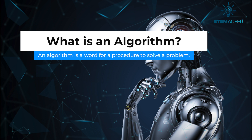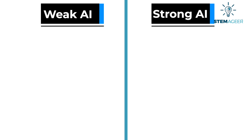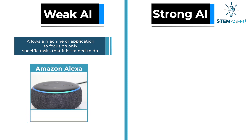Generally there are two different categories of AI: weak AI and strong AI. Weak AI, or narrow AI, allows a machine or application to become a specialist and focus only on specific tasks that it's trained to do. For example, you may have heard of personal or virtual assistants like Siri or Alexa.